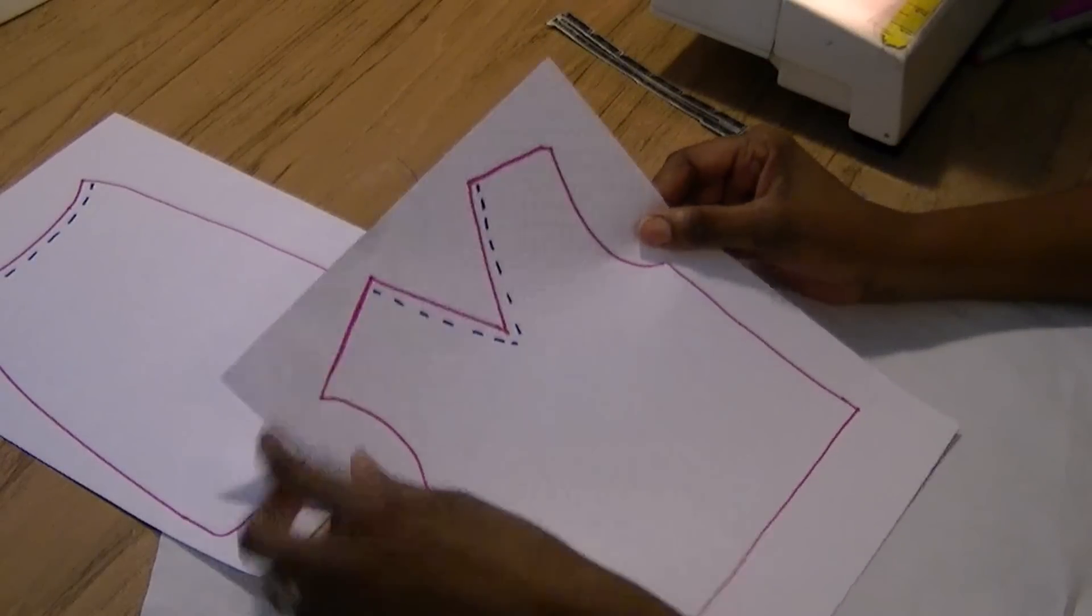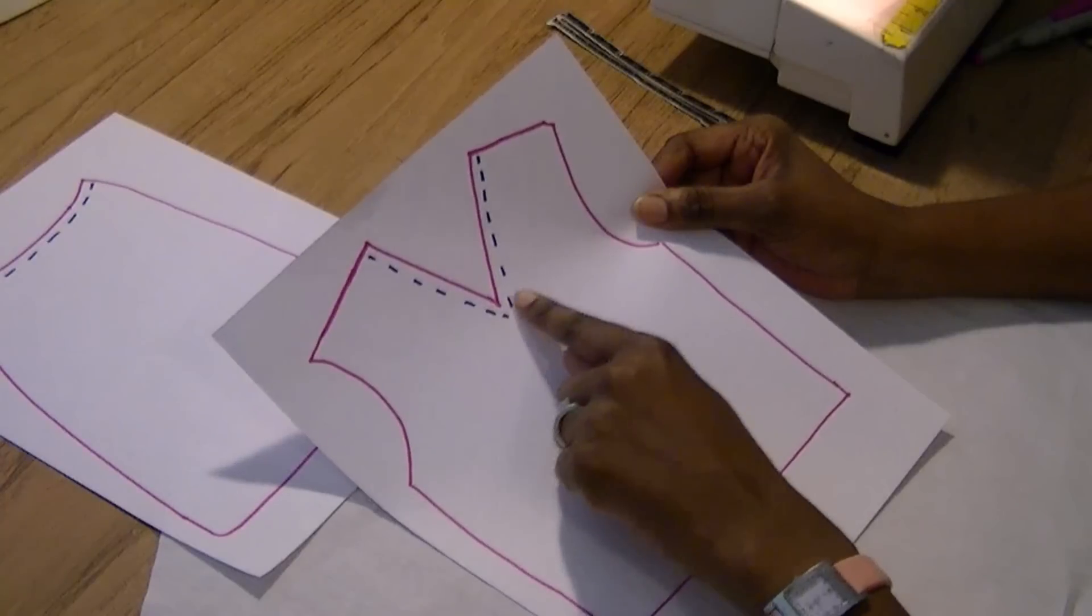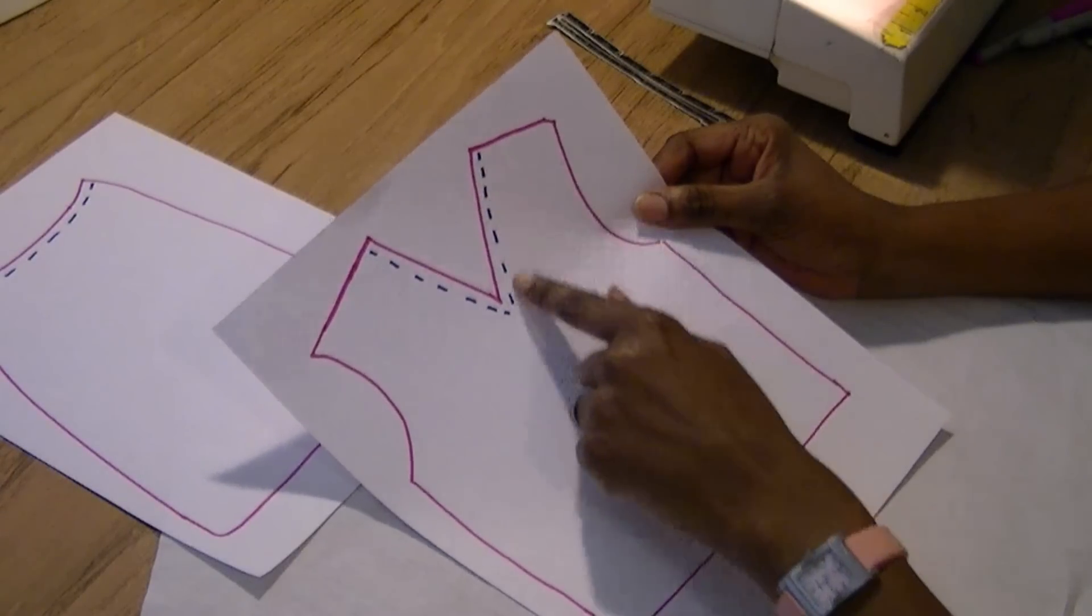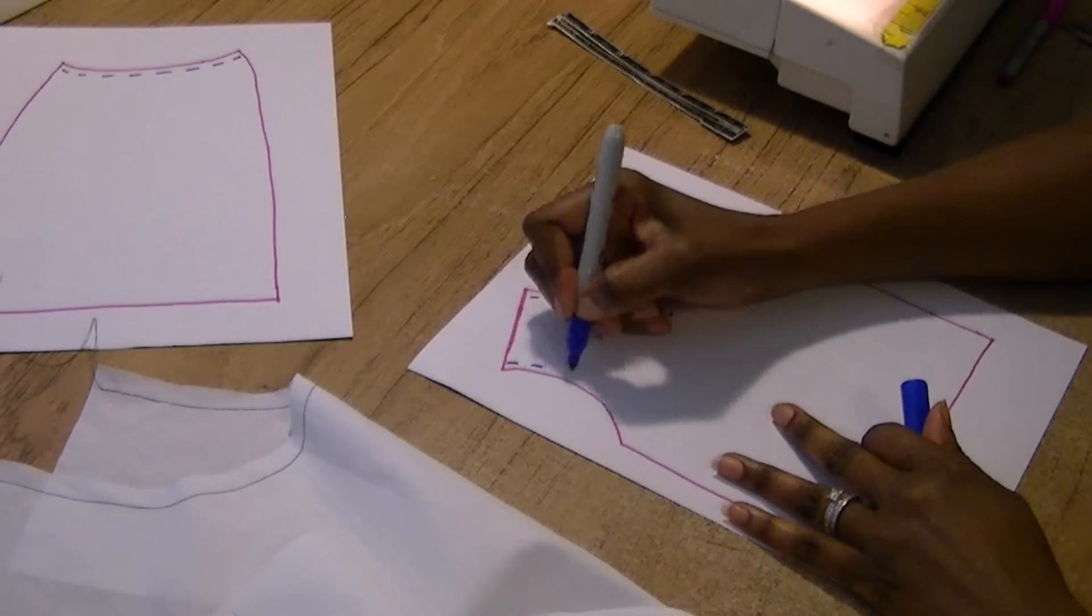As I mentioned, the v-neck also you want to stay stitch because this is one area that would really get stretched out of shape. So you would stay stitch that as well as the armholes, and that would keep the armhole shape.